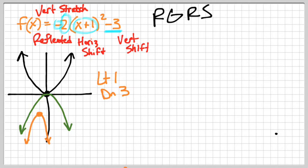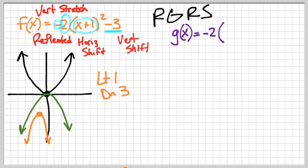There's one other kind of shift we can have — a horizontal compression or stretch — and this actually changes the game quite a bit. I left the original function on the left; here's the new function on the right: negative 2(3x - 9)² minus 3. Notice how everything else is the same except for what's inside with x.